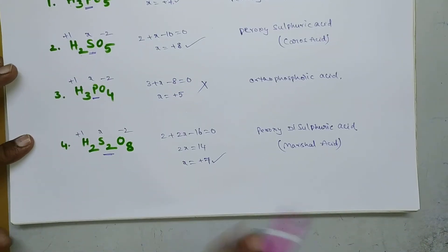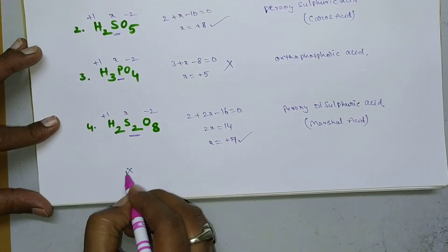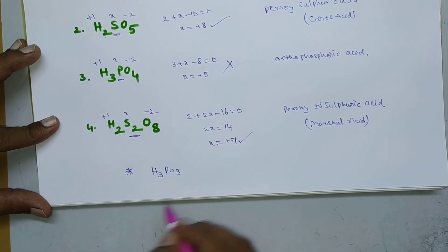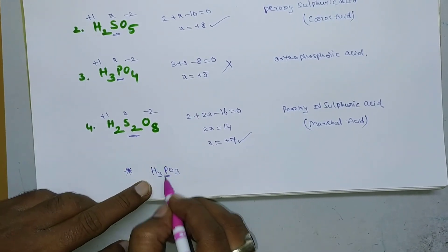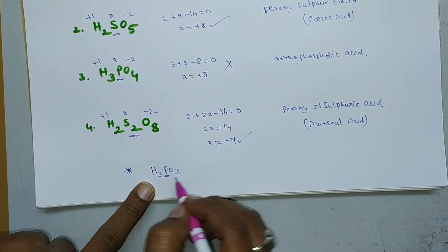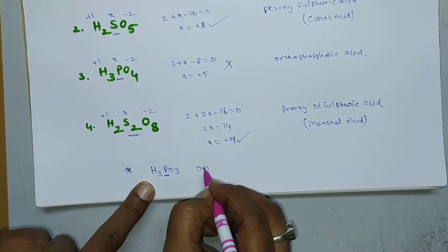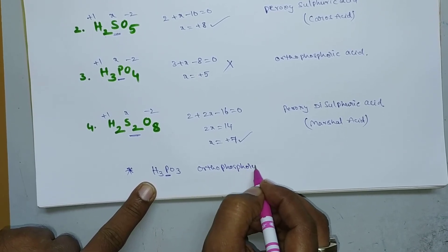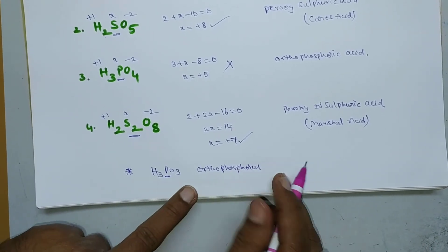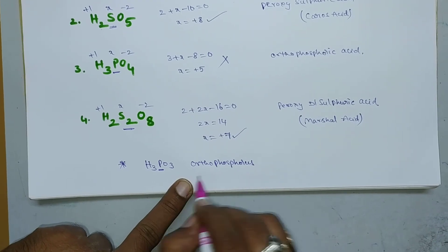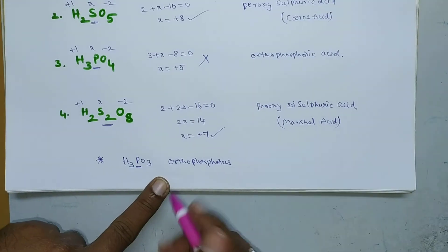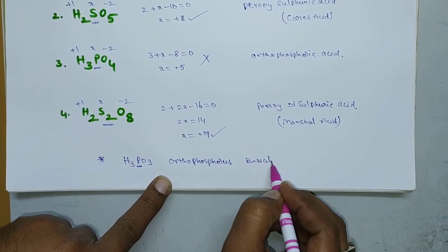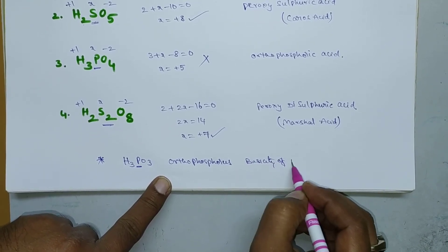Now here is a small question for you: calculate the oxidation state of phosphorus in H₃PO₃, which is orthophosphorous acid. We have discussed the structure of this molecule in the previous video, so go through that. Also calculate the basicity of the acid.